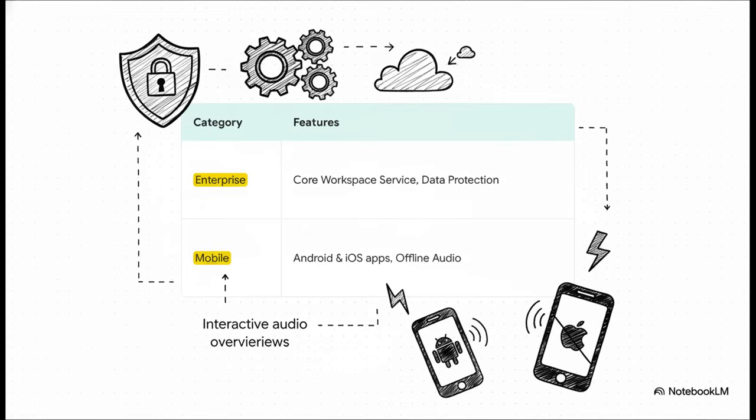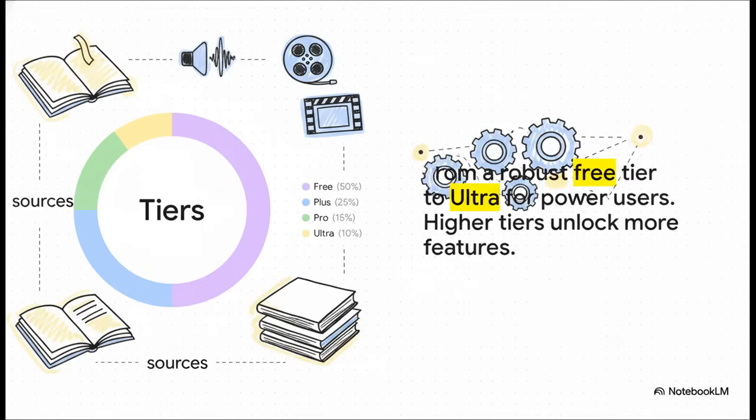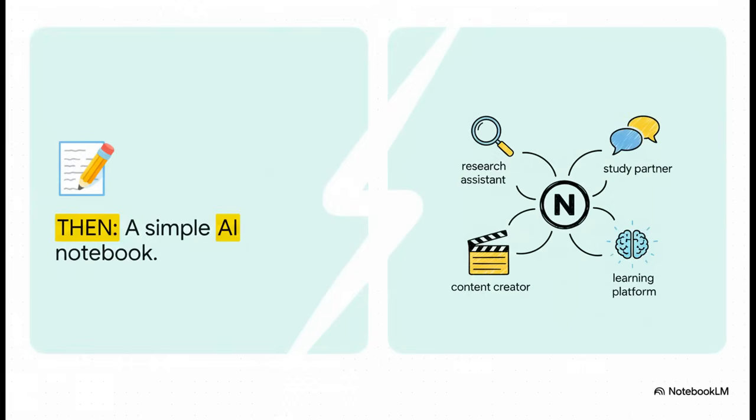And for the rest of us, there are dedicated apps for Android and iOS that bring all these features right into your pocket, including offline access to those cool interactive audio summaries. There are now a few different service tiers too. It starts with a pretty powerful free version, and then goes up to Plus, Pro, and Ultra. As you'd expect, the higher tiers unlock more advanced features, like being able to use more sources at once and generating more audio and video content each month.